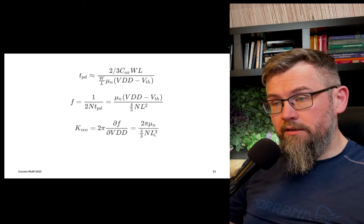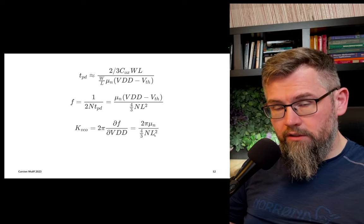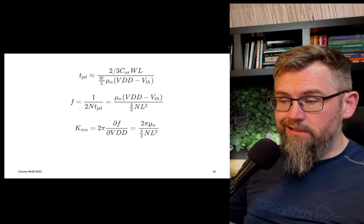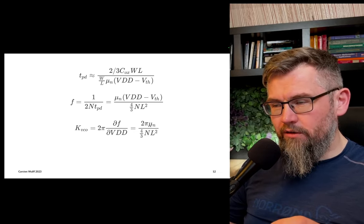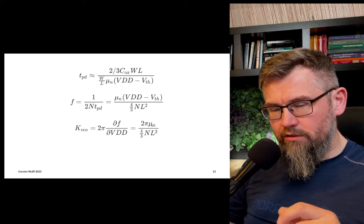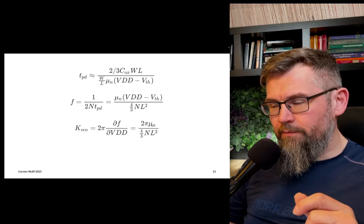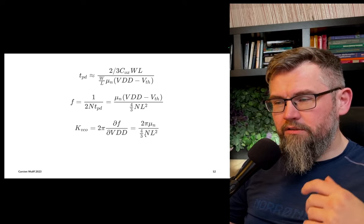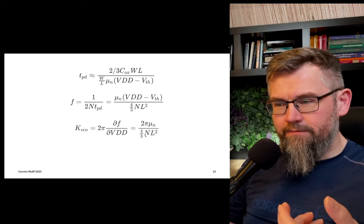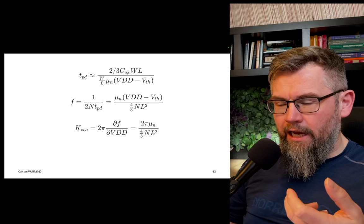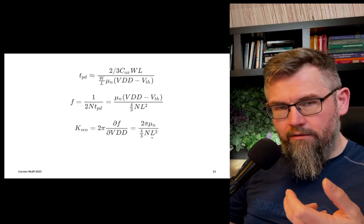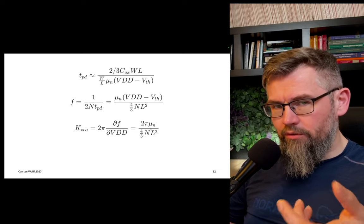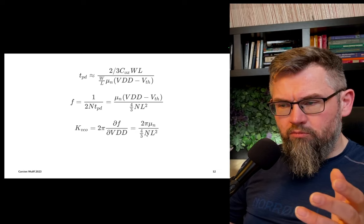We can see that the kVCO will be given by the mobility divided by the length squared. So that means that in ring oscillators, if you want a low kVCO, then you should make your transistors long. Mobility, it's a bit unfair here because I've assumed that the mobility of NMOS and PMOS is the same. It is not. So this is a gross oversimplification, but it shows the idea. We have a relationship to length squared, we have a relationship to mobility of both NMOS and PMOS, and not much else.